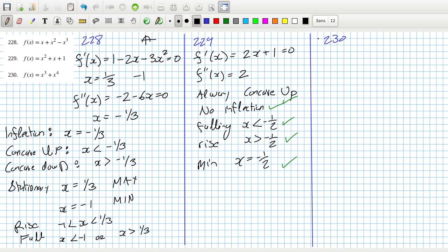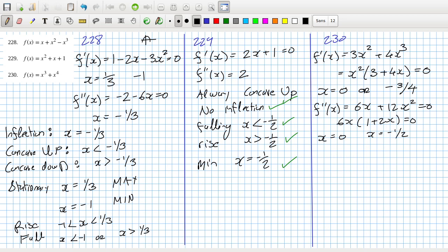Problem 230. The first derivative is 3x squared plus 4x cubed, which will be x squared times 3 plus 4x, needs to equal zero. So that will be when x is zero or minus 3 over 4. The second derivative is 6x plus 12x squared needs to equal zero, so that's 6x times 1 plus 2x equals zero. That would be x equals zero and x equals minus 1 over 2. We have a problem here with 0 twice.